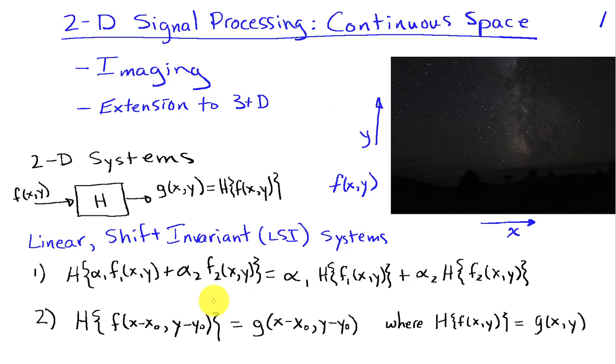It says if I add two things at the input, it corresponds to adding the outputs. Now, the shift-invariant property says that if I shift the location of the image and I apply it to the system, that I get a shifted version of the output.